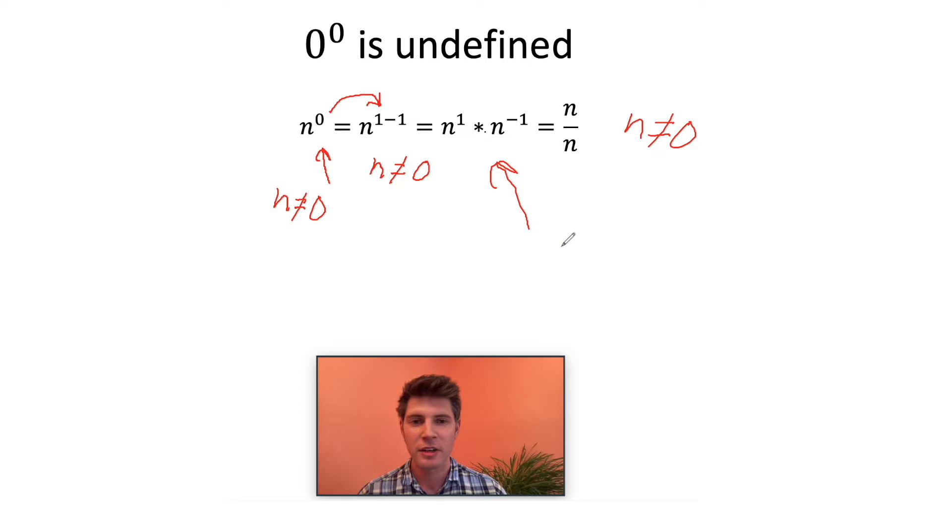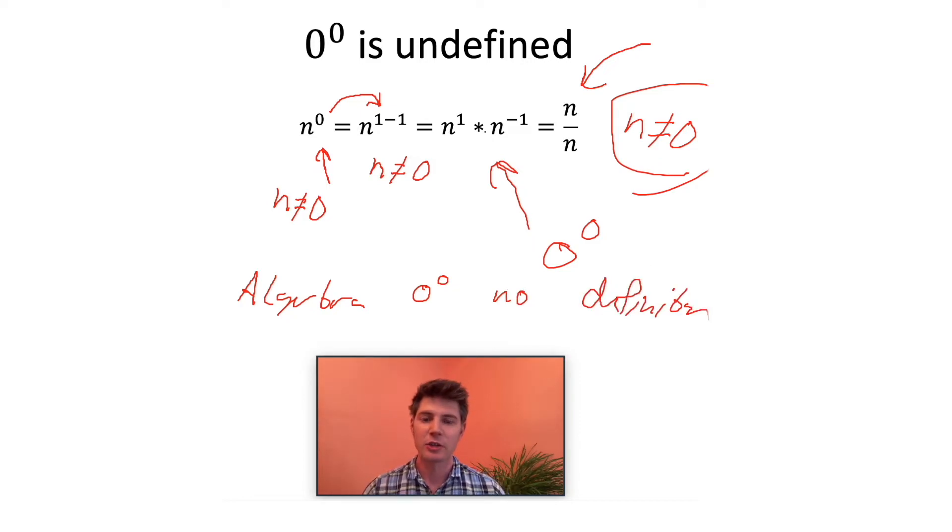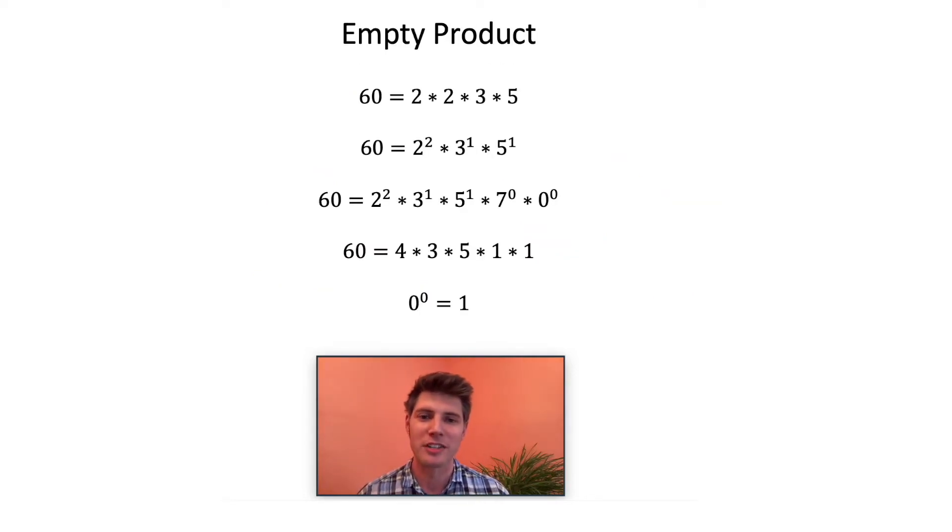Using this definition, zero to zero is not defined. When algebra talks about zero to the zero, it has no definition. That's what undefined means, there's no definition. So algebra's opinion of zero to zero is it's got nothing to say. So if there's no definition provided by algebra, I'm going to go back to my definition from before, which was the empty product. Zero to zero equals one.